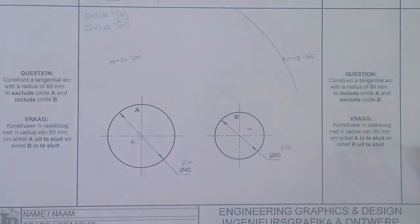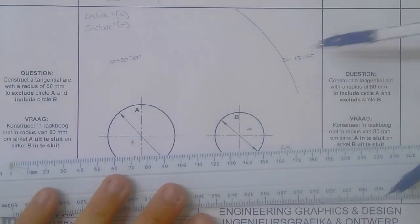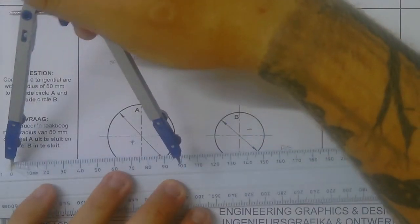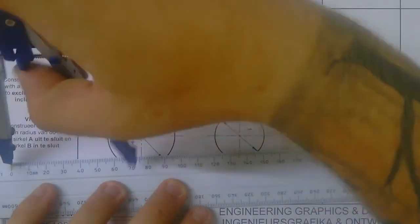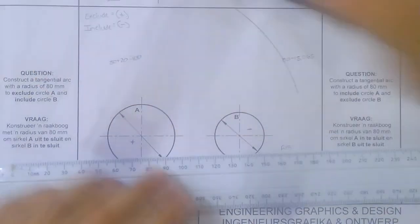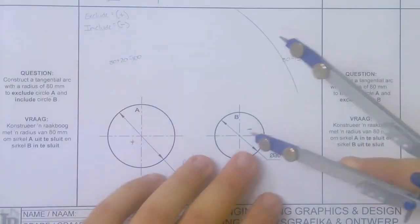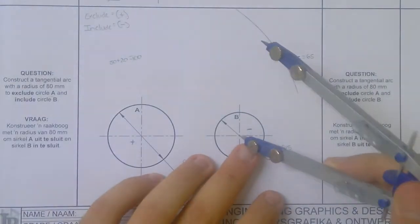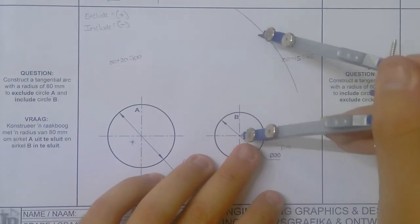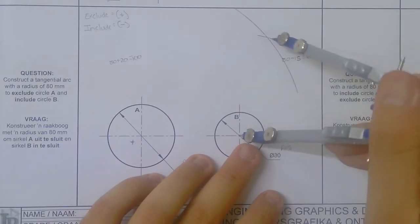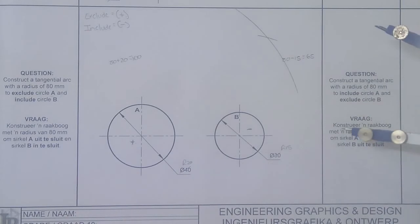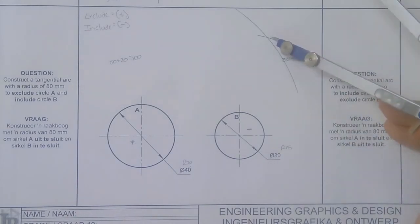Then we set our compass to 65, set it to 65, put it on the include circle, and drawing our X. So we've got that little X over there.